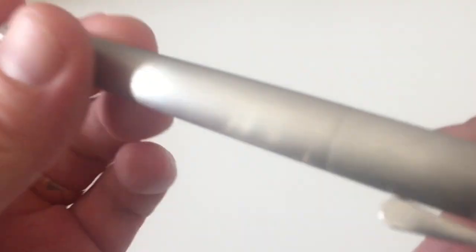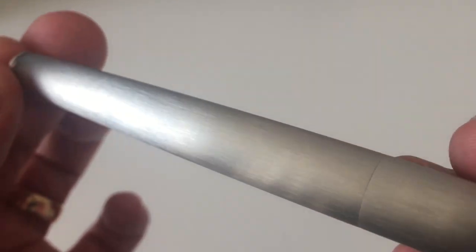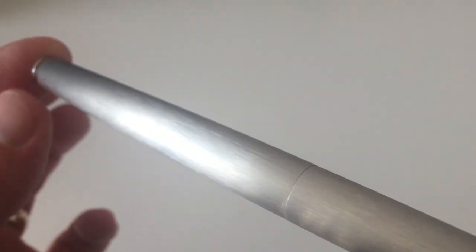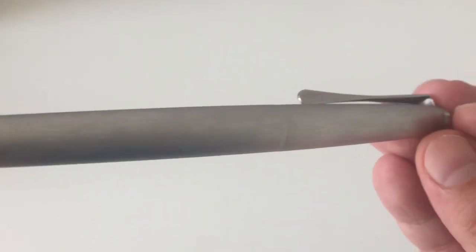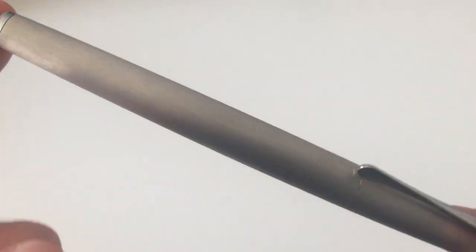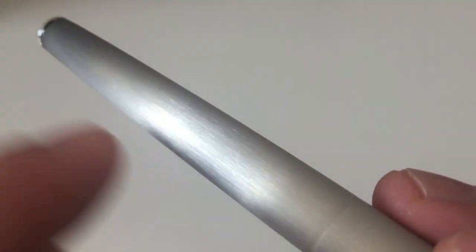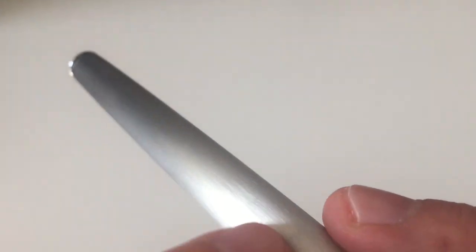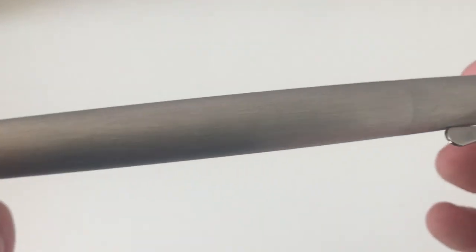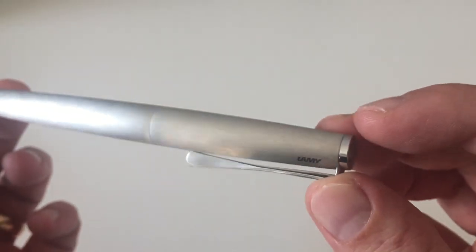Then you have this nice brushed steel finish, which I find really nice. There's quite some sunlight outside today, so you can see how that reflects the light and changes the appearance of the pen, depending on how I angle the pen into the light. It's this brushed steel finish, which I find is really nice.